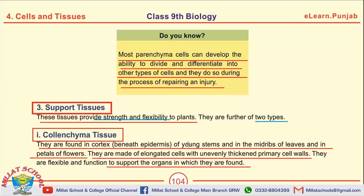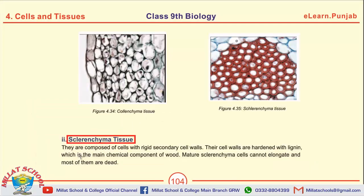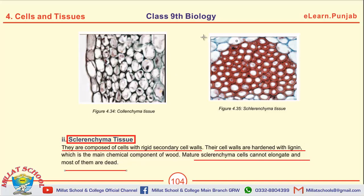Support tissues are of two types. Collenchyma cells are present in the cortex, which is beneath the epidermis, and collenchyma cells are flexible. Sclerenchyma tissues are composed of cells with rigid secondary cell walls. Their hardness is due to the presence of lignin, and mature sclerenchyma cells cannot elongate — most of them are dead. Lignin is the main chemical component of wood.